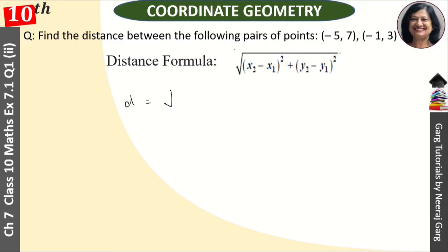Distance is equal to... x₂ is -1, so x₂ is -1 minus -5 whole square plus 3 minus 7 whole square.